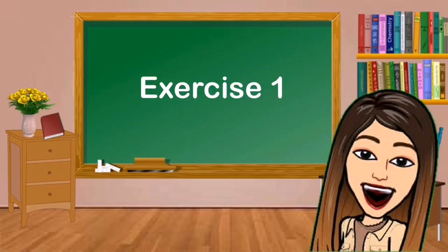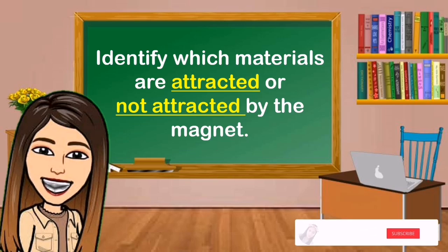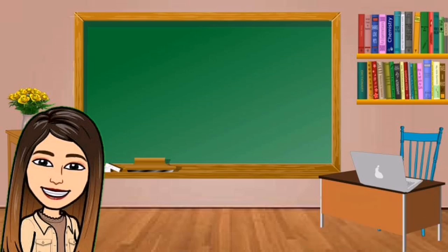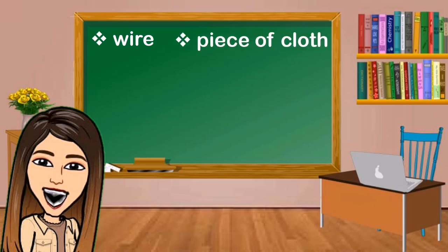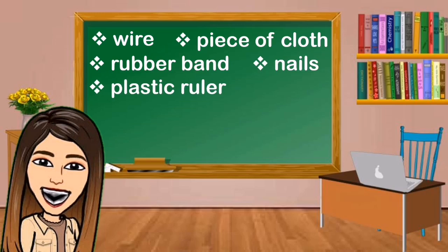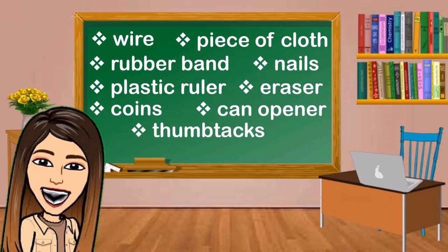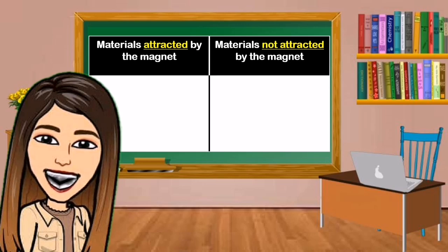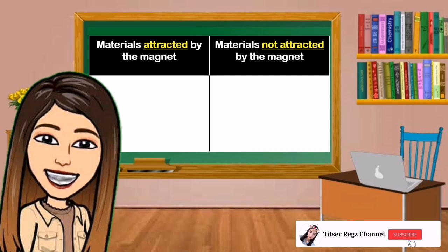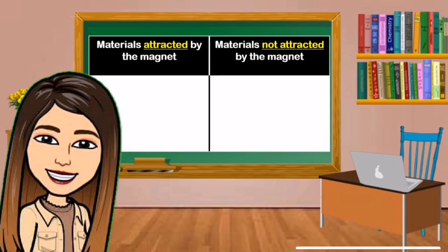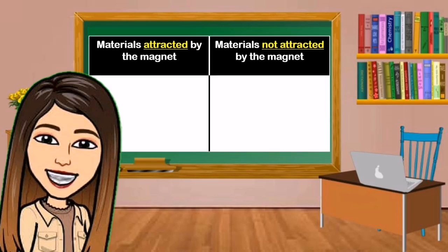Let's try exercise 1. Identify which materials are attracted or not attracted by the magnet. So these are the following materials: wire, piece of cloth, rubber band, nails, plastic ruler, eraser, coins, can opener, thumbtacks, and sharp pencil. Copy this table in your science notebook for you to answer the activity in exercise 1. So you are going to identify the materials whether attracted by the magnet or not attracted by the magnet. Just write the following names of the materials inside the table.